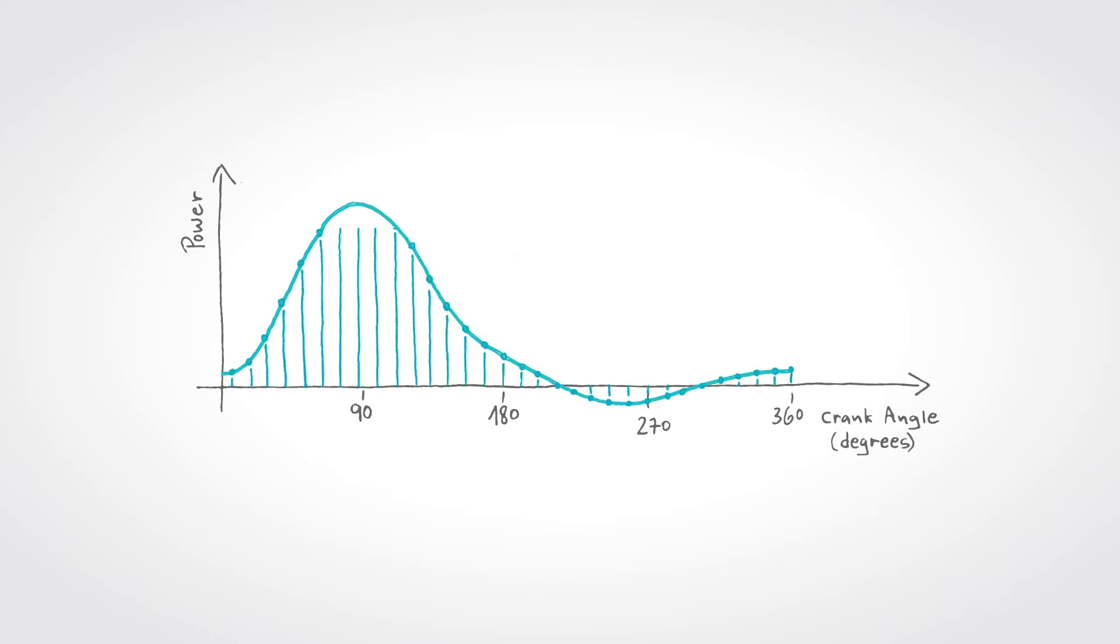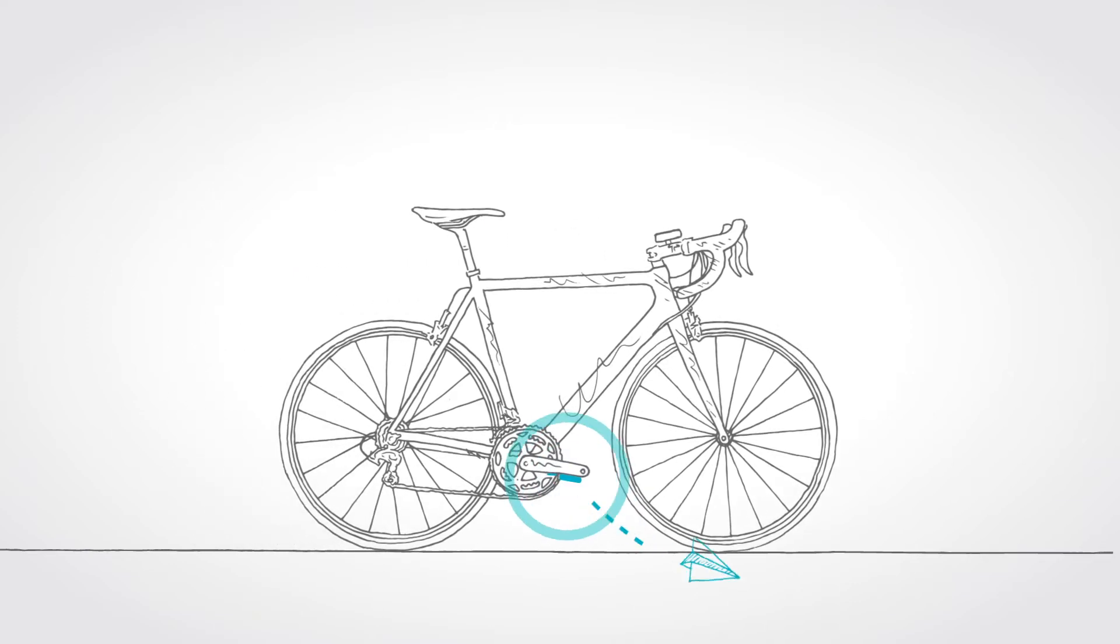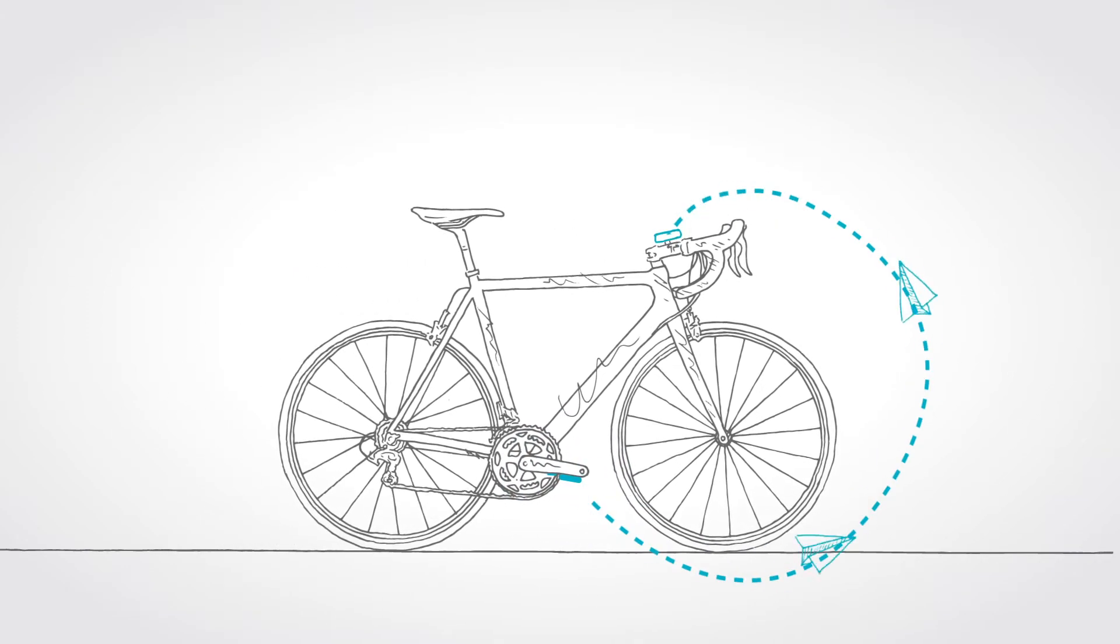Sampling the strain gauges 200 times per second. The sensor samples are then sent to the PowerBeat comp units, which calculate the power and transmit the output to your head unit.